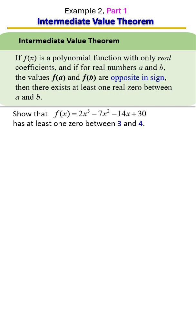The Intermediate Value Theorem. If a function is a polynomial function with only real coefficients, and if for real numbers a and b, the values of f(a) and f(b) are opposite in sign,